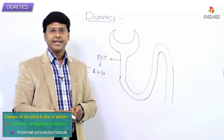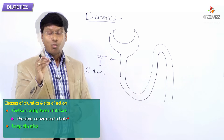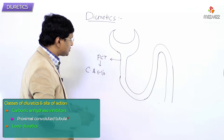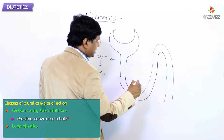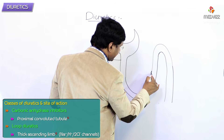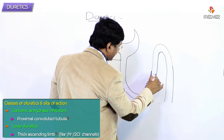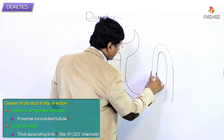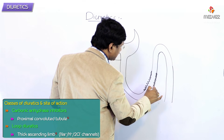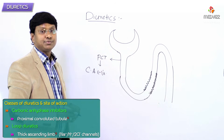Next we have loop diuretics. Loop diuretics act on the thick ascending limb. In the thick ascending limb, we have discussed that there is presence of sodium-potassium-2-chloride channels.